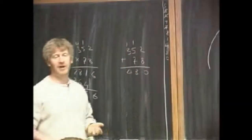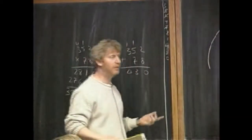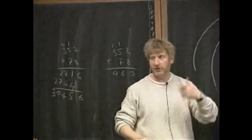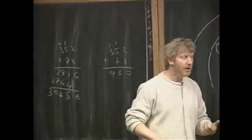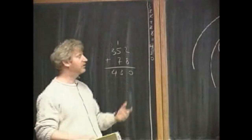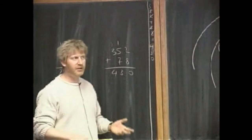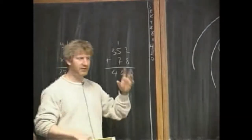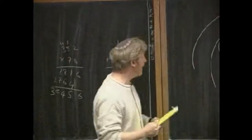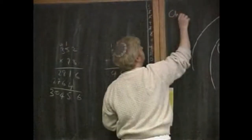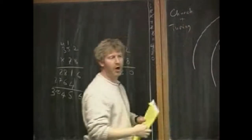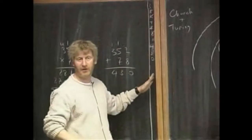People for thousands of years had a notion of computation. Euclid in 300 BC describes the greatest common divisor algorithm — it's very algorithmic, very step-by-step. But nobody really captured the essence of what we think is a computation versus what we think is just logical human thinking until the last century. That was carefully formalized by Alan Turing and at the same time by Alonzo Church — Church and Turing, independently.